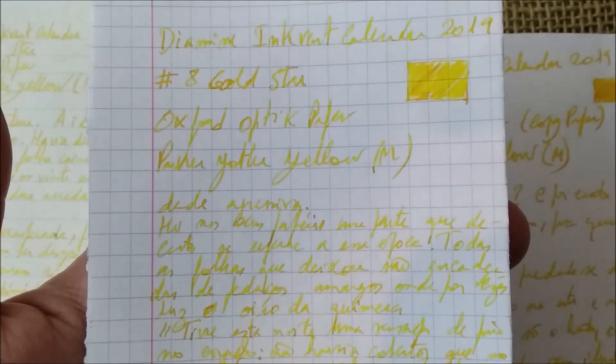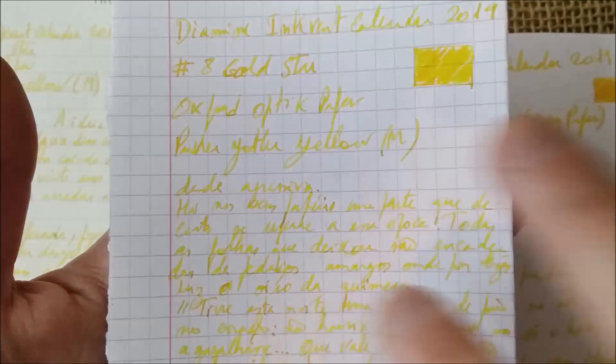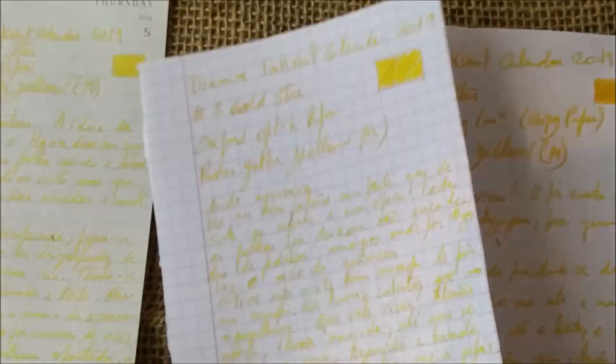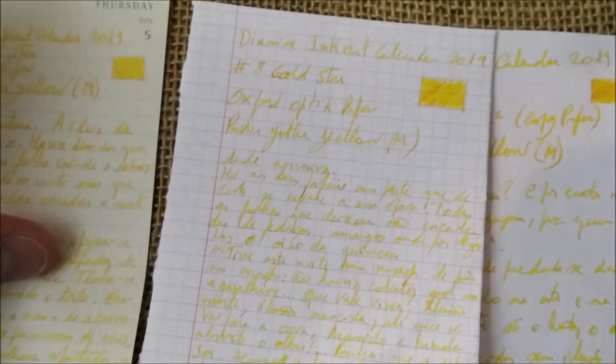And also, here on the other side, there's not much bleed through. Then we have the Oxford Optic paper, which is a really good paper and you can see that the ink behaved very well. It is very hard to notice the shimmer in the Oxford paper. It looks like it doesn't absorb it at all so it's not easy to see.